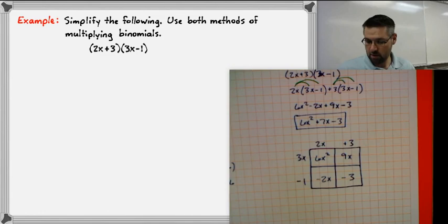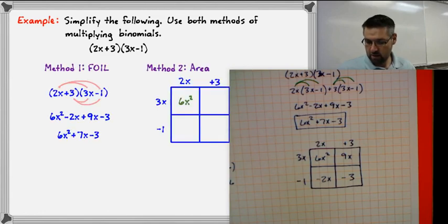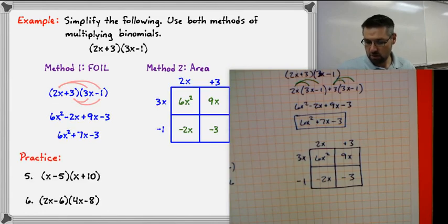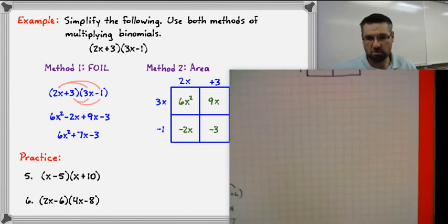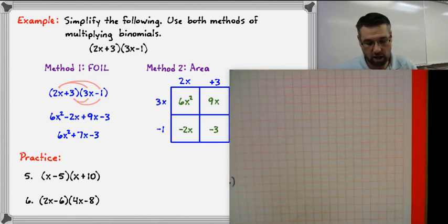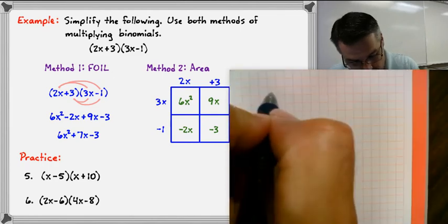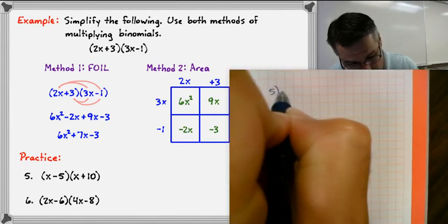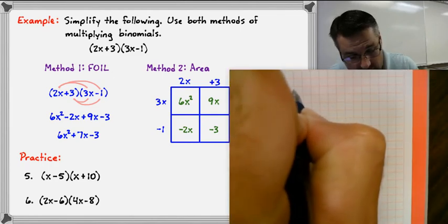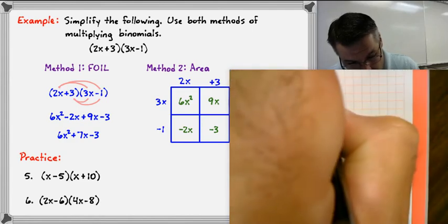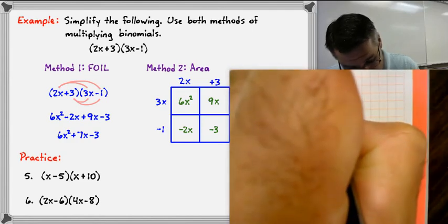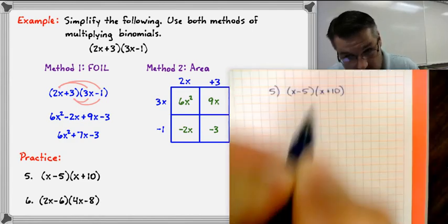Using the area model: draw a rectangle and break it into 2x and 3 across the top, and 3x and negative 1 down the side. The four areas are: 3x times 2x equals 6x squared; 3x times 3 equals 9x; negative 1 times 2x equals negative 2x; negative 1 times 3 equals negative 3. Combining those gives the same answer. So those are two different methods for multiplying binomials.